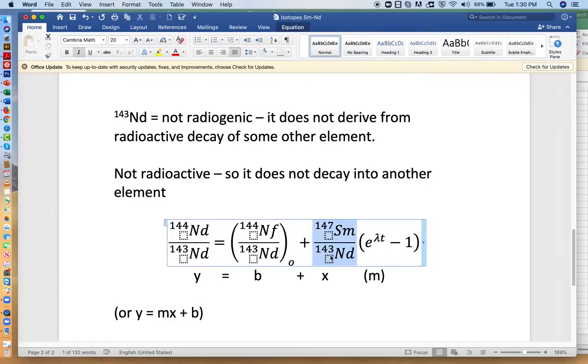And this is our x, 147 over 143. And then the slope, m, is e to the lambda t minus 1.